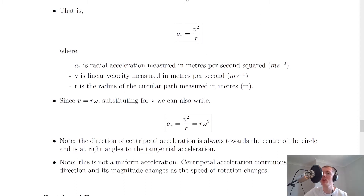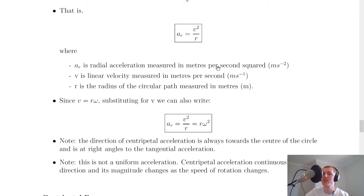You don't need to be able to do the derivation — you just need to be able to use this equation for centripetal acceleration. AR equals V squared over R, where AR is the radial acceleration measured in metres per second squared, V is the linear or tangential velocity measured in metres per second, and R is the radius of the circular path measured in metres.